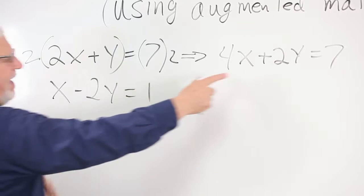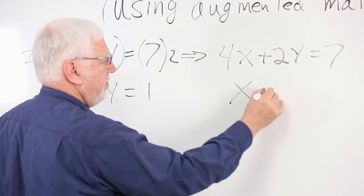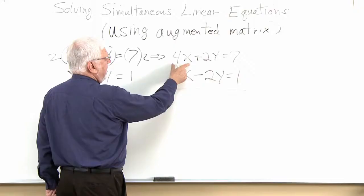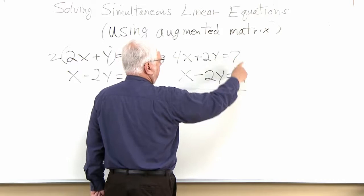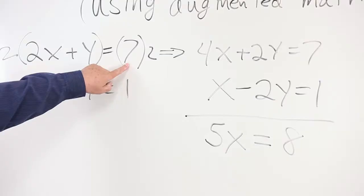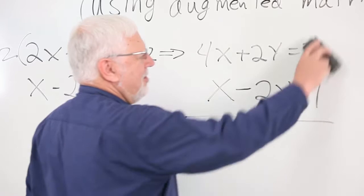Now if we just rewrite the second equation and add the two equations together, that keeps everything equal. I made a mistake — I wrote 4x plus 2y equals 7, but I didn't multiply the right-hand side by 2. Let's correct that: 2 times 7 is 14. So the multiplied equation is 4x plus 2y equals 14.